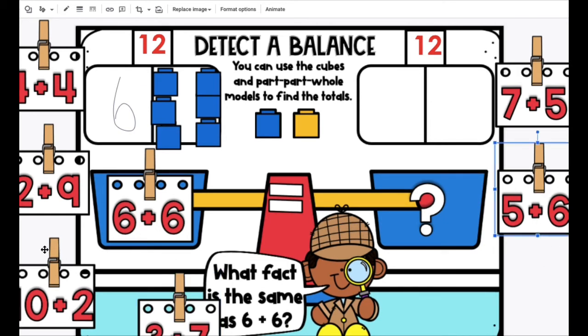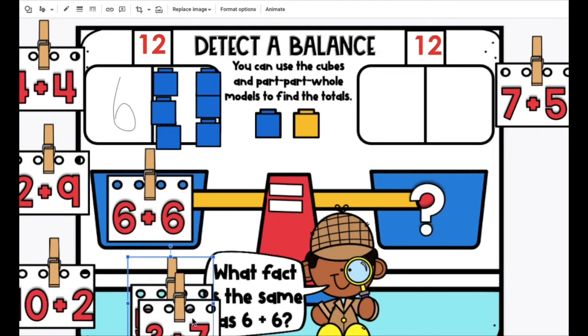5 plus 6. Well, this one is 6 plus 6, so could it be equal? No, it's going to be 1 less because 5 is 1 less than 6. 7 plus 5?